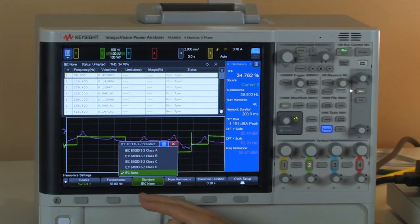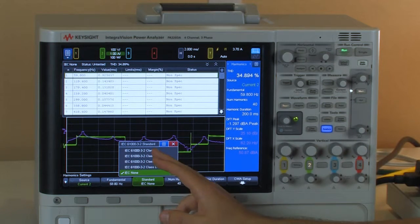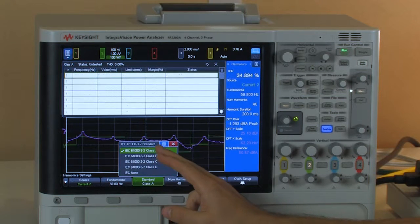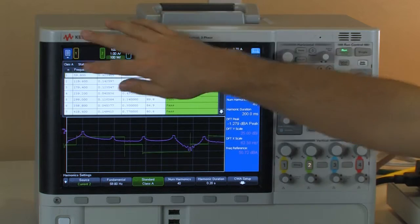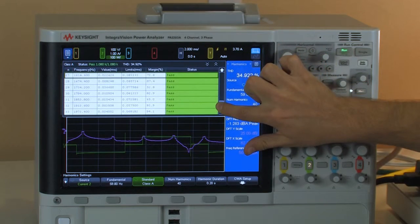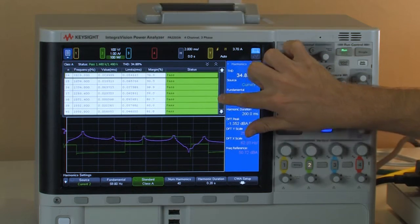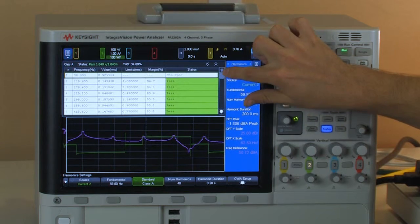So I'm going to go ahead and show you maybe a little bit of each one. So for class A, you can see the test reruns and I get all of my different harmonics up to the 40th harmonic. And you can see that I have nice green for passing.